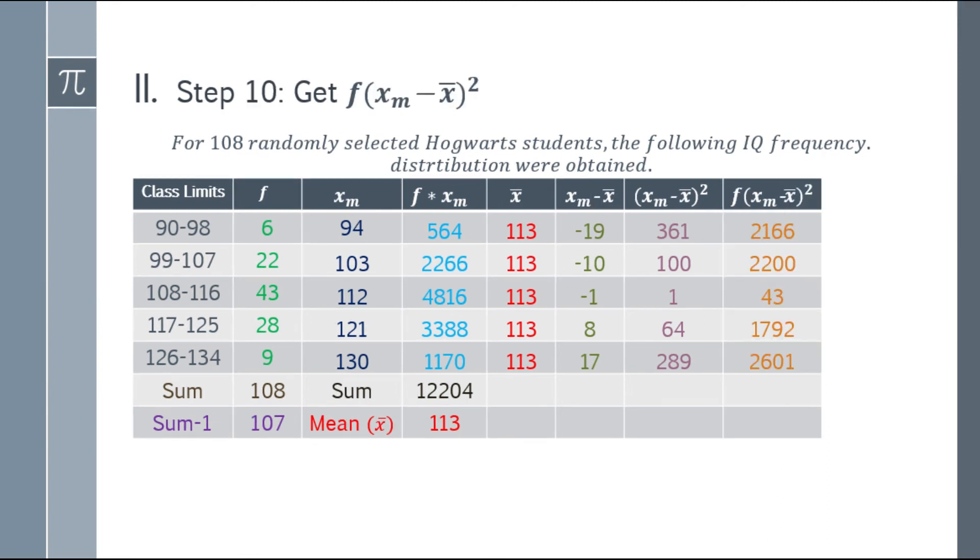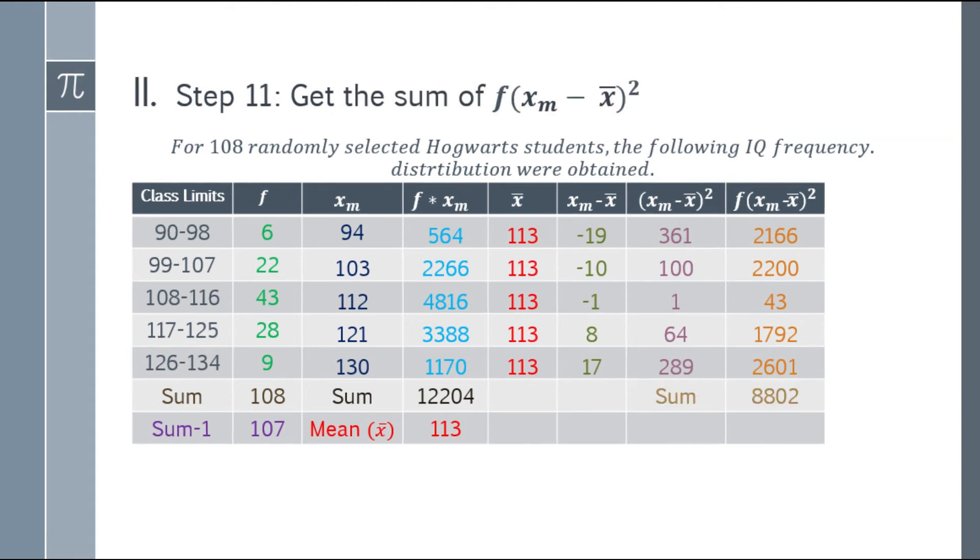Now, we have to multiply the squared answers by the frequency. That will be 6 times 361, which is 2,166. Next, 22 times 100 is 2,200. 43 times 1 is 43. 28 times 64 is 1,792. And 9 times 289 is 2,601.